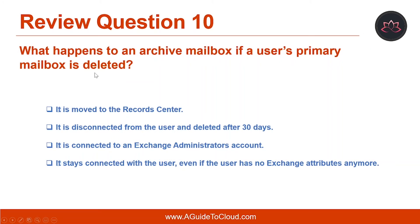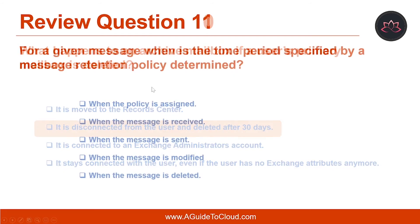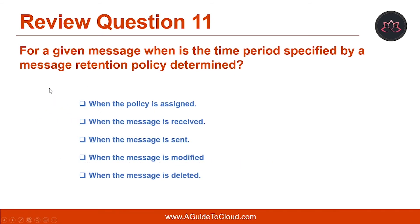Question number ten: what happens to an archive mailbox if a user's primary mailbox is deleted? The right answer is: it is disconnected from the user and deleted after 30 days.